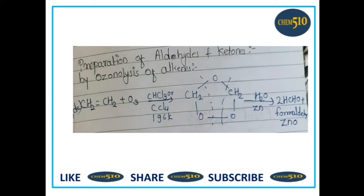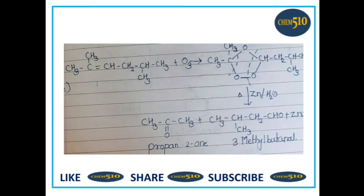Then ozonolysis. This reaction is used for the preparation of aldehydes and ketones. Ozonolysis is an organic reaction where unsaturated bonds of alkene, alkyne, or azo compounds are cleaved. Alkenes and alkynes form organic compounds in which the multiple carbon-carbon bond is replaced by a carbonyl group, and in azo compounds, nitrosamines are formed. In one example, an aldehyde is formed from ethene, and in another example, a ketone is formed.